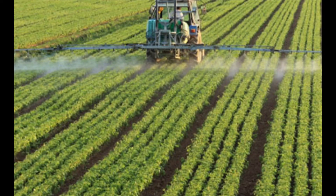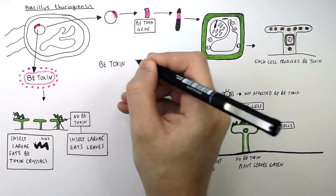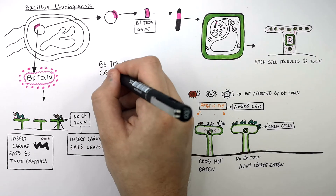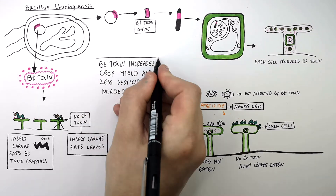This here is the use of pesticides by a farmer. If you use a Bt Toxin crop, you'll require less pesticides being sprayed on the crops. So the Bt Toxin increases crop yield and less pesticides are needed.